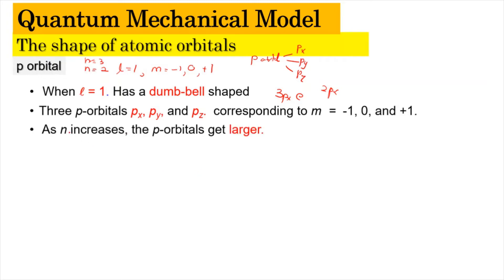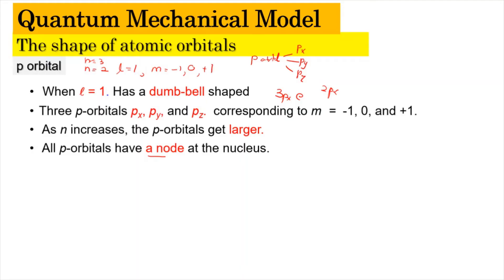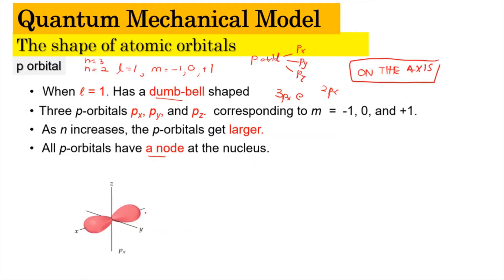The P orbital has a node at the nucleus, which means the dumbbell separates in the middle into two halves. When sketching the P orbital, the key thing to remember is that the dumbbell lies along a specific axis. After drawing the X, Y, and Z axes, for 2Px the dumbbell is drawn along the X axis.